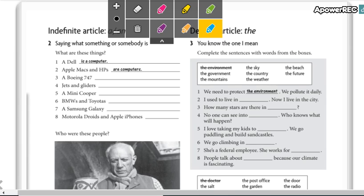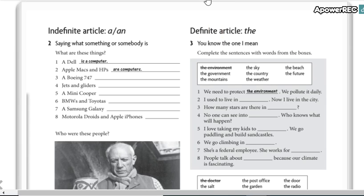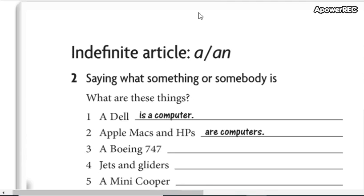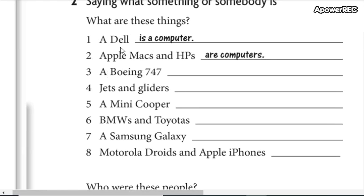And here, in this page, we have the indefinite article A or AN. So what are these things? This is a computer. Apple Macs and HPs are computers. So remember, you use just A or AN when we are talking in singular. When we talk in plural, we don't write them — we don't write A, we don't write AN.